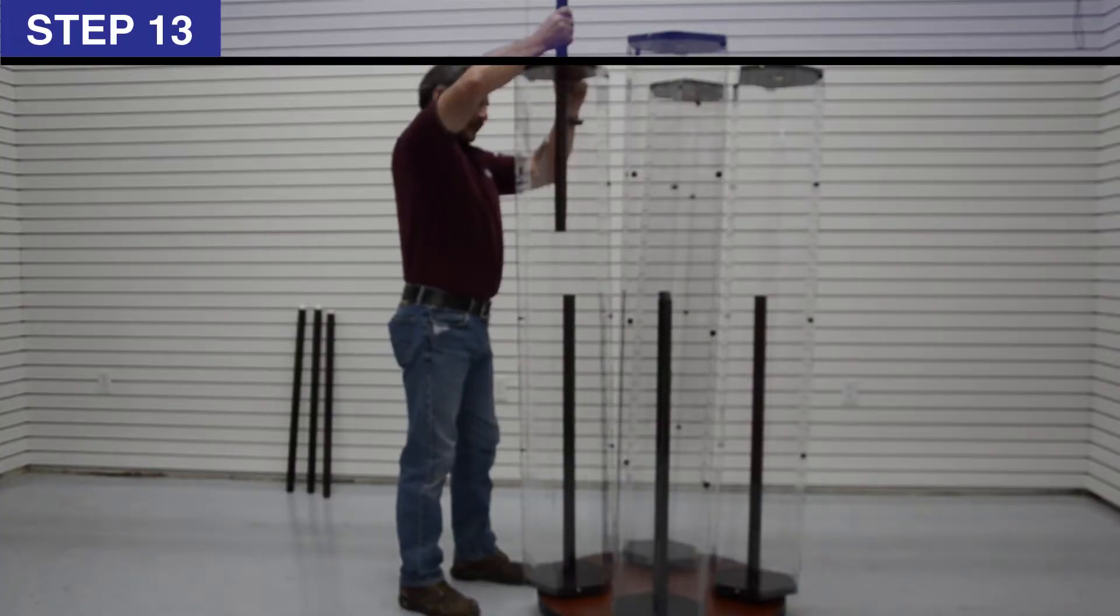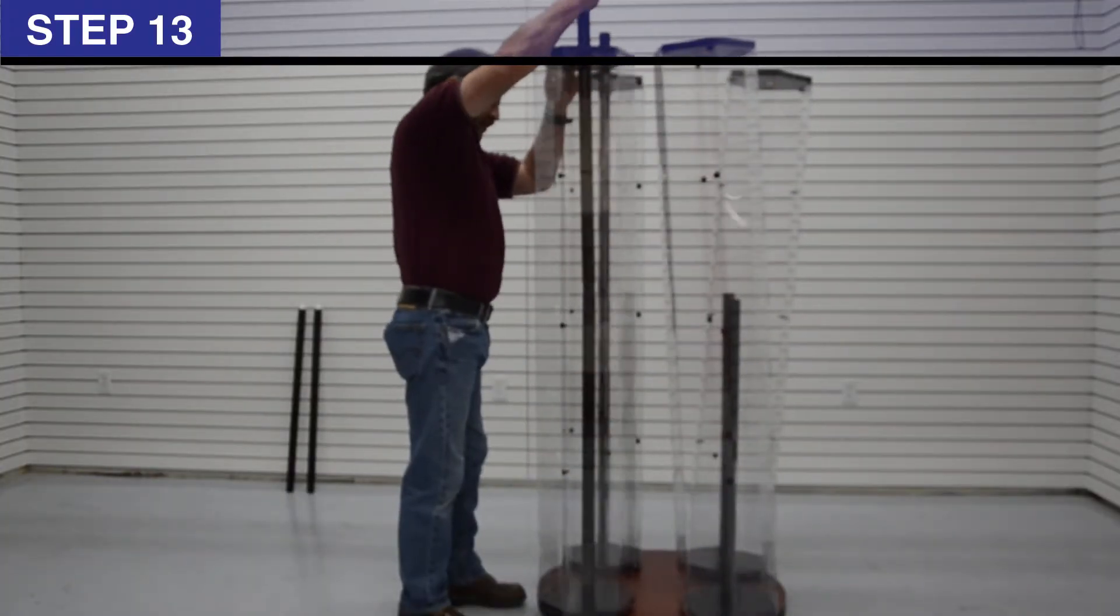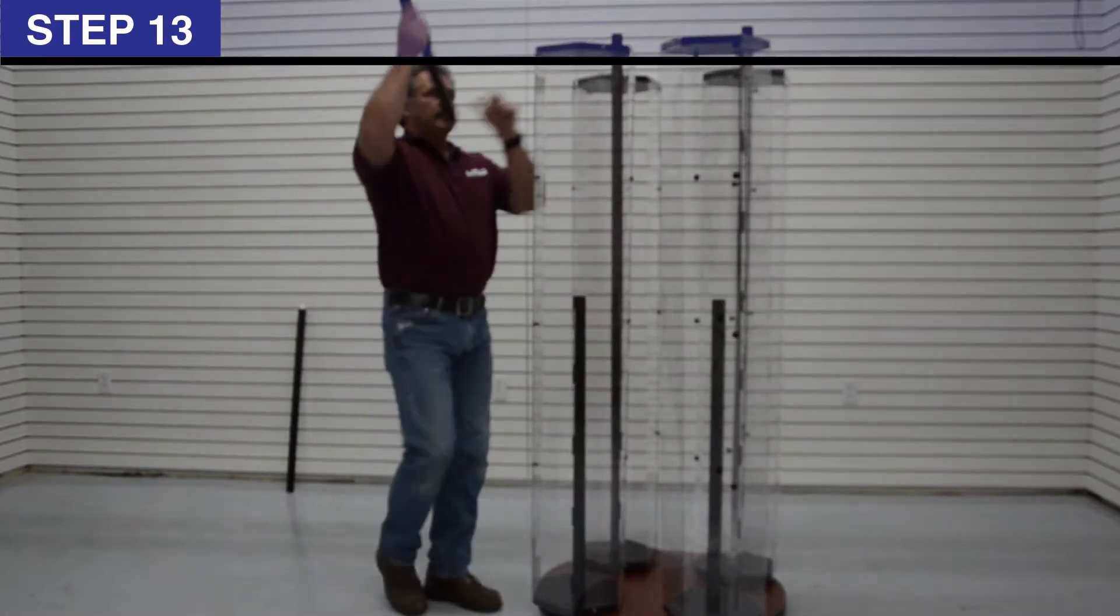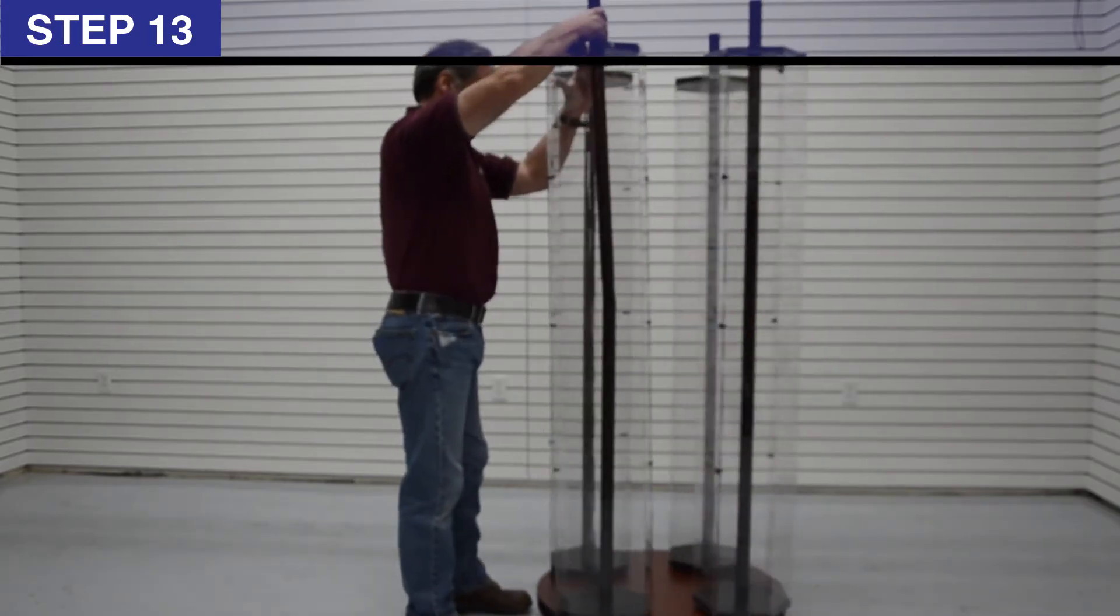Step 13: Slide top pole end down through tower side panel assembly into bottom pole O. Adjust as needed for clear tower. Repeat step 13, 3 more times to complete top pole assembly.